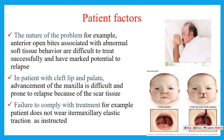Patient factors also contribute to relapse. The nature of the problem — for example, anterior open bite associated with abnormal habits such as digit sucking, thumb sucking, or tongue thrust — has a tendency to relapse. Also, those patients with cleft lip and palate: advancement of the maxilla is difficult and prone to relapse due to scar tissue. Also, failure to comply with treatment — for example, the patient not wearing intermaxillary elastic traction as instructed — increases the tendency for relapse.